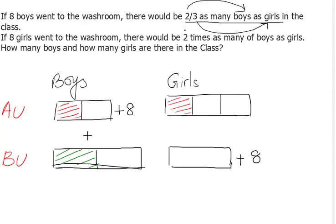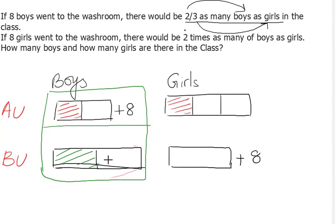So we know that the number of boys here and the number of boys here are the same—these two quantities are equal. So how do I represent that in an equation? I'm going to say: you have two a units here, two a units plus eight boys.